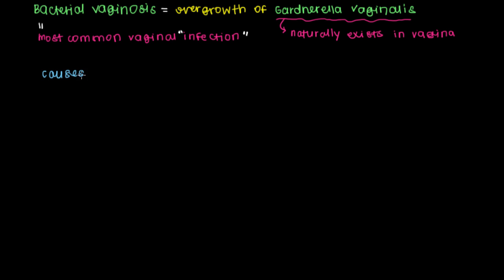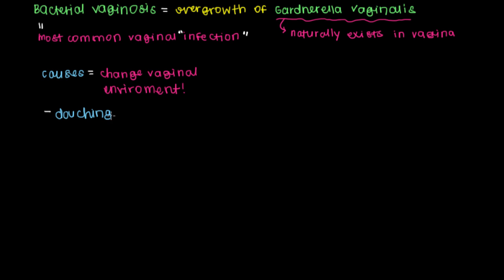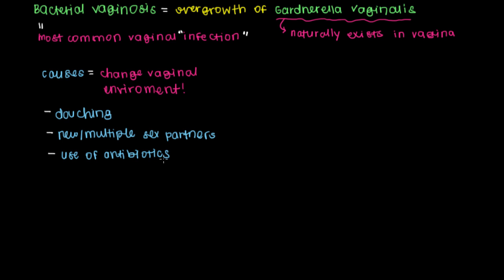When we look at the causes of bacterial vaginosis, they're all things that change the vaginal environment. That can include acts like douching — rinsing of the vagina. Another cause is having new or multiple sex partners. And finally, the use of antibiotics is a known cause. For example, someone being treated for a throat infection or pneumonia with antibiotics can have those antibiotics attack the bacteria in the vagina, allowing Gardnerella vaginalis to overgrow and cause bacterial vaginosis.